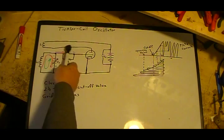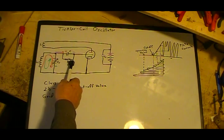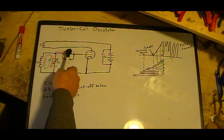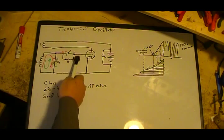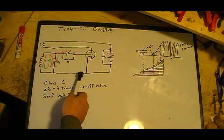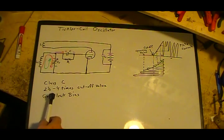Instead, what it uses is what is known as a grid leak. And a grid leak bias basically is a capacitor and resistor connected together. They can either be in parallel, or the resistor can go across the grid cathode, which generally the cathode is at ground, so the resistor would just go to ground.